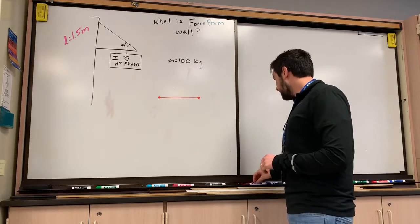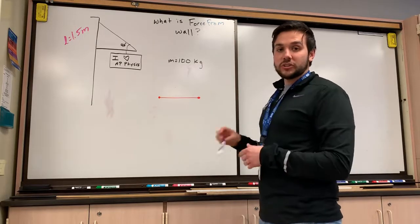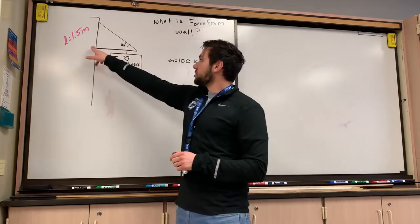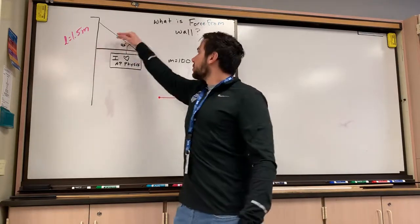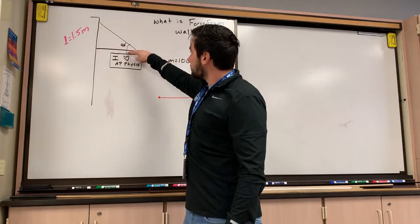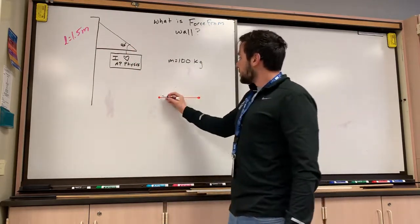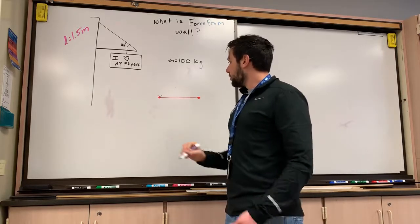So the first thing we want to do is identify our axis of rotation. Where is this bar going to rotate about? And the easiest thing to do is to put it on the wall because the string is pulling it up like this, the sign is pulling it down like this. And so we're going to put the axis of rotation right here. I'm going to just mark it with an X.